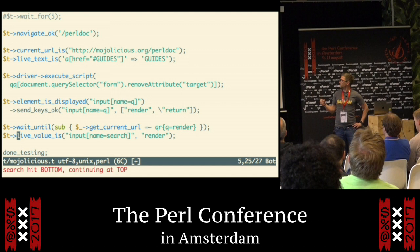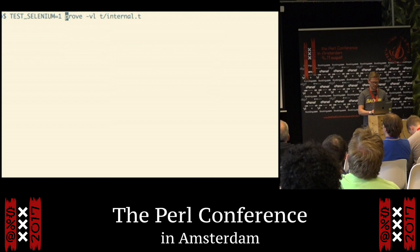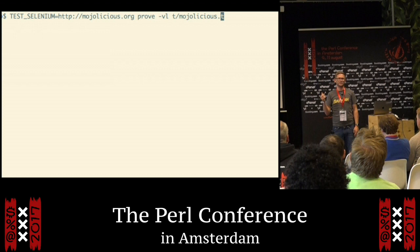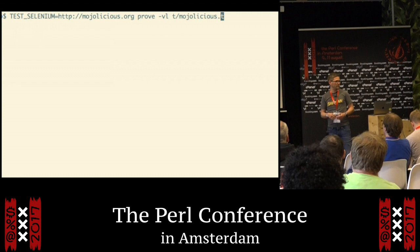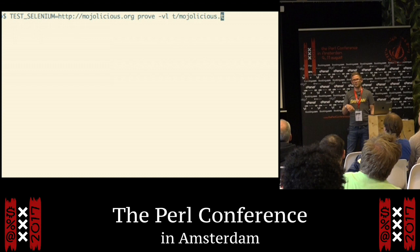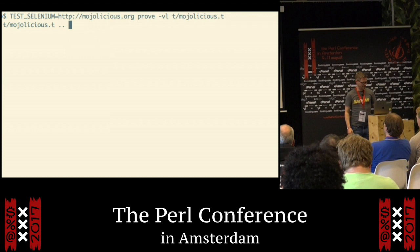Here you can see that I set up a test Selenium environment variable that has a base URL. That means that instead of checking against the local application, it's going to go to that web page and use that URL as the base for all of the relative URLs. So when the test says go to slash perldoc, it's going to end up as http://modulicious.org/perldoc.